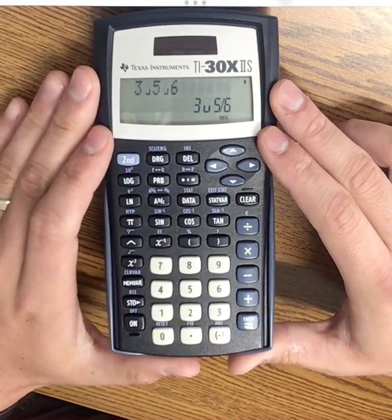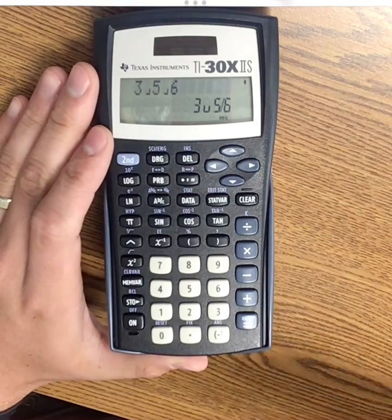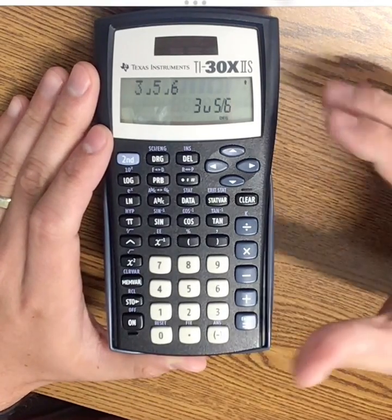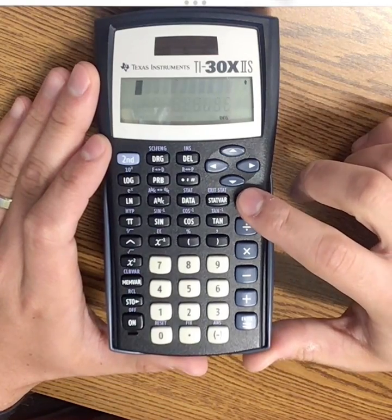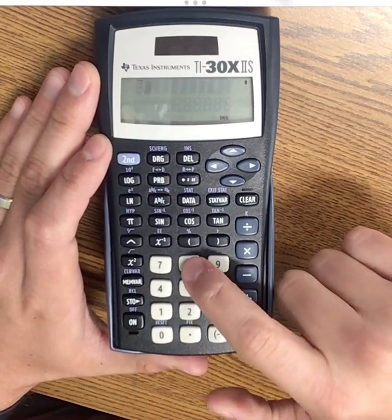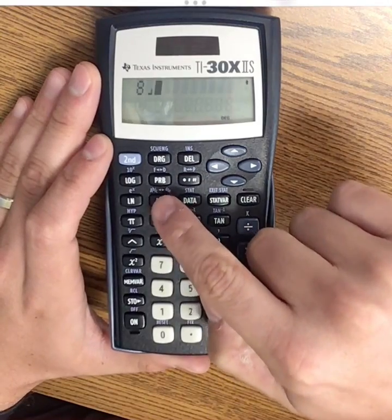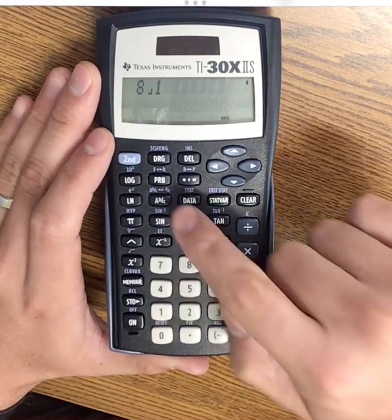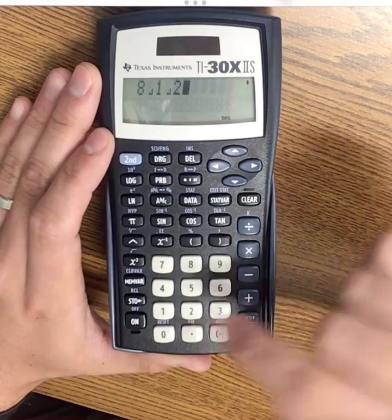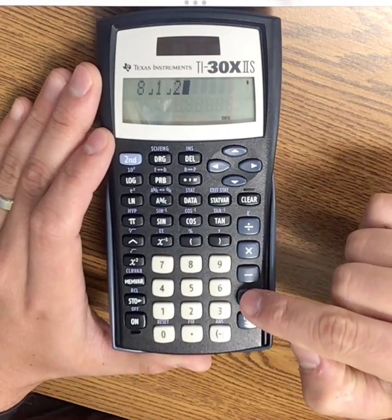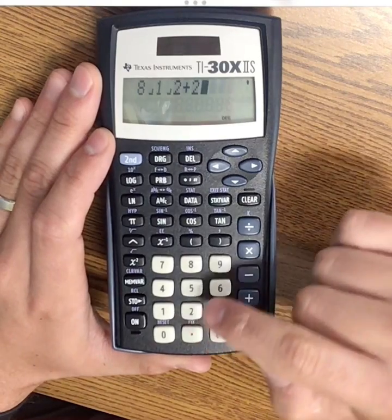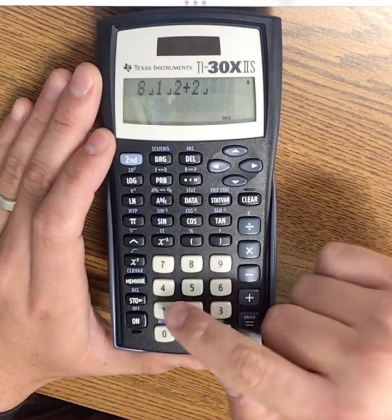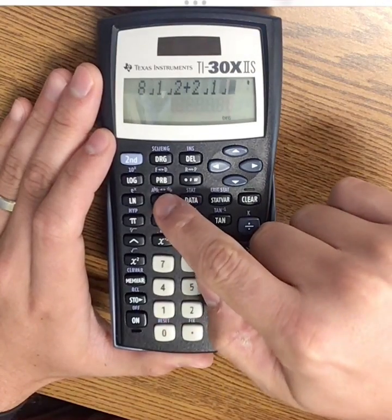I can use the same type of calculation for any operation with mixed numbers. For example, let's say I had eight and one-half.